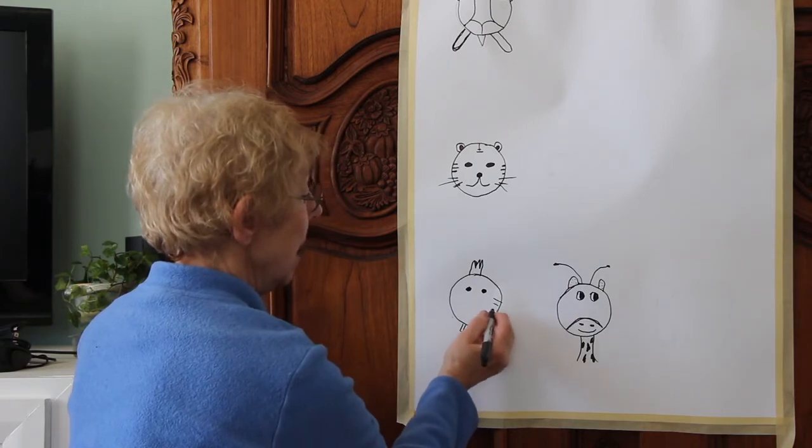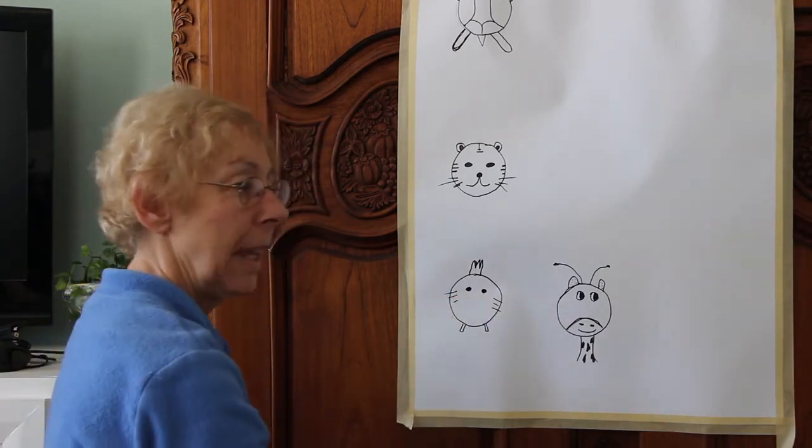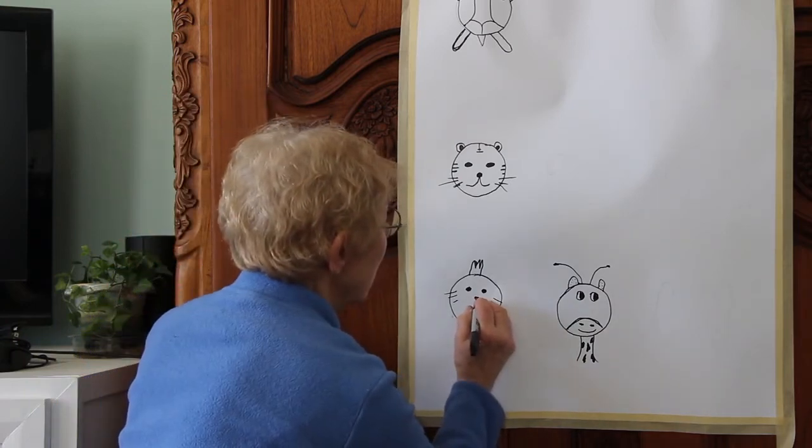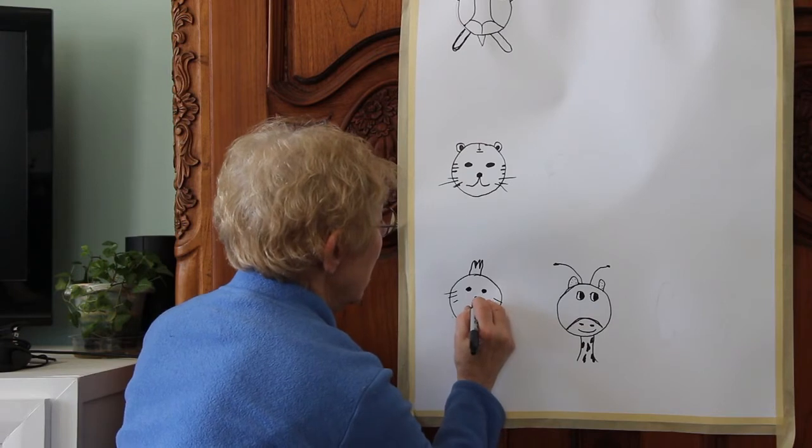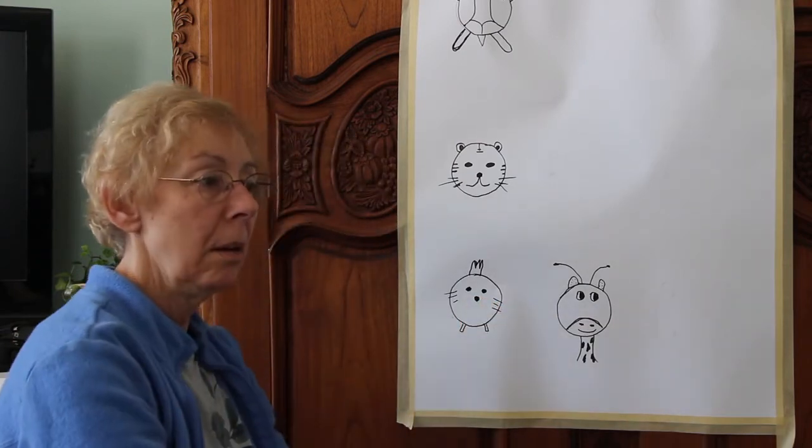So we need some feathers coming down. And we need a nose. I don't think they call it a nose, but I call it a nose. And there, we have a chicken.